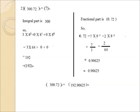Now for the fractional part 0.72: 7 into 8⁻¹ plus 2 into 8⁻², which is 7/8 plus 2/64, equals 0.90625. Combining the results, 300.72 to the base 8 is equal to 192.90625 as the resultant decimal number.